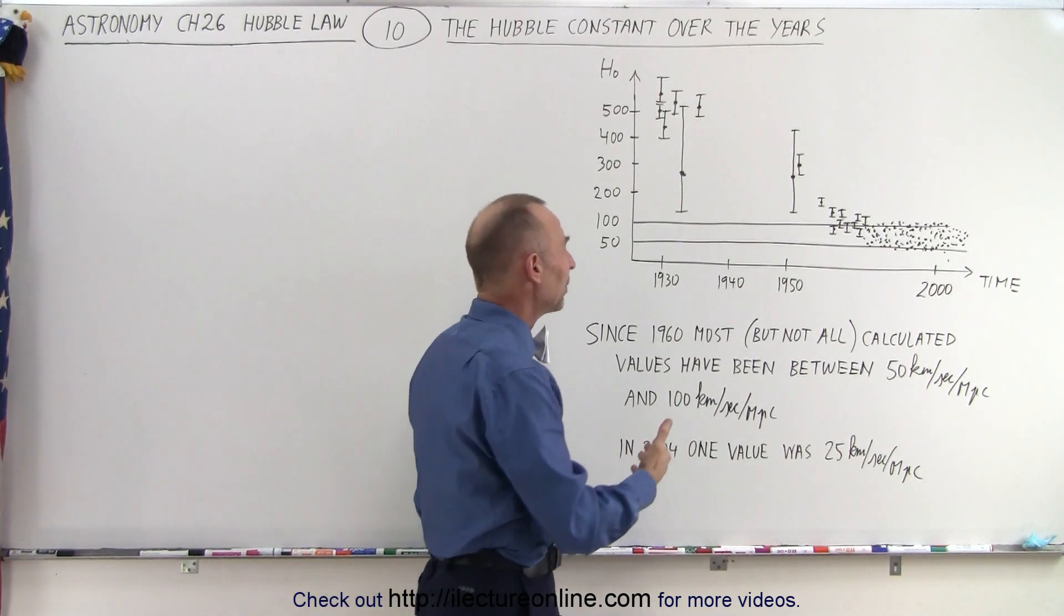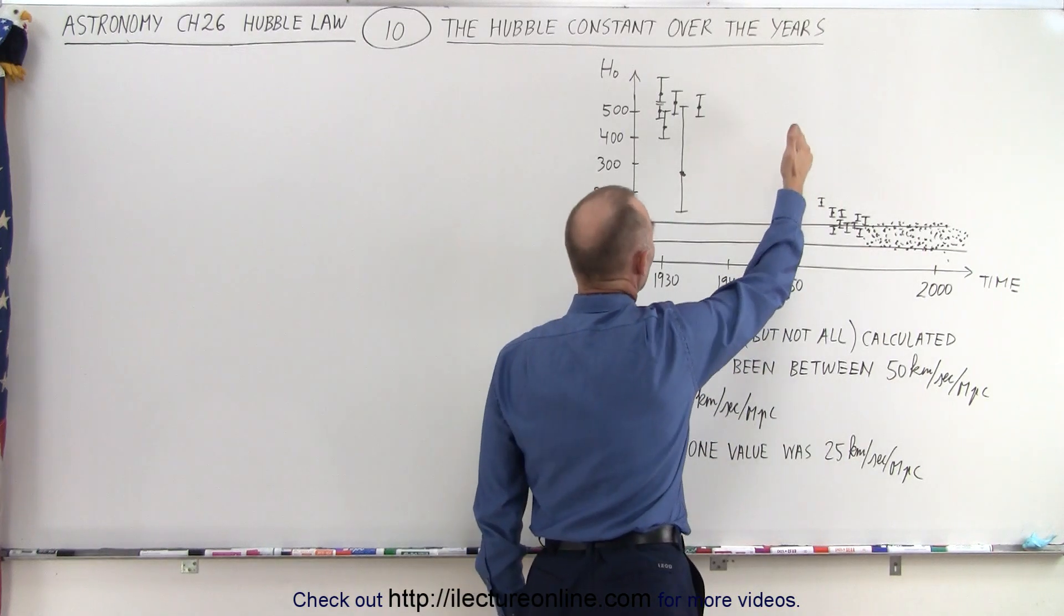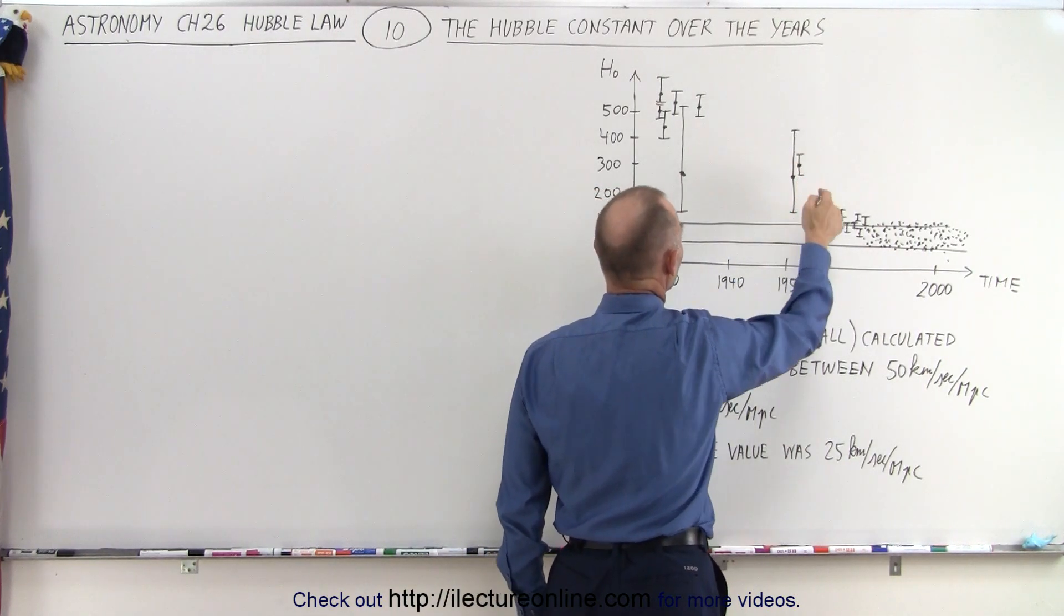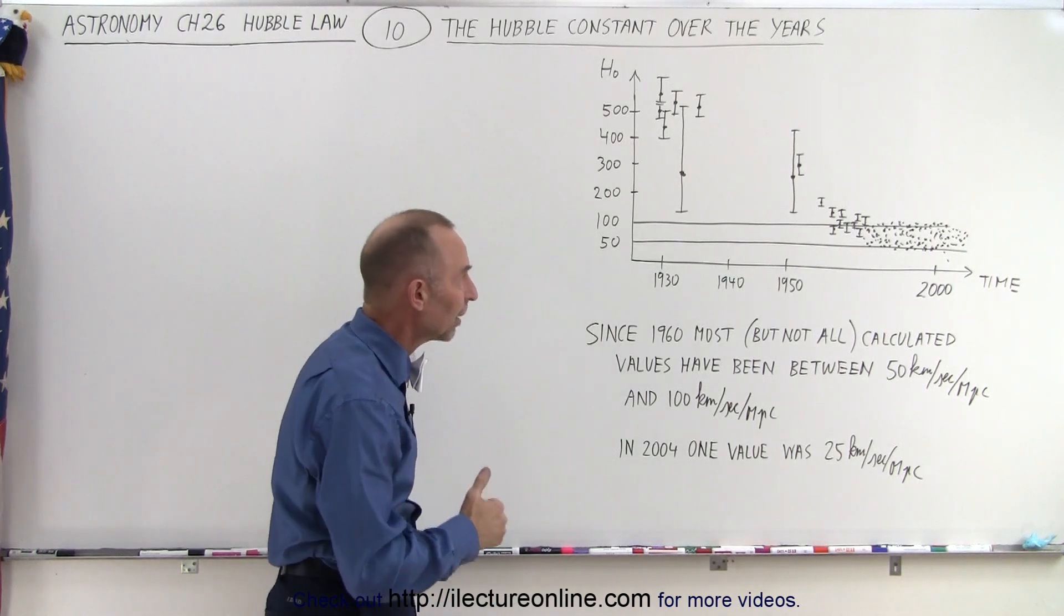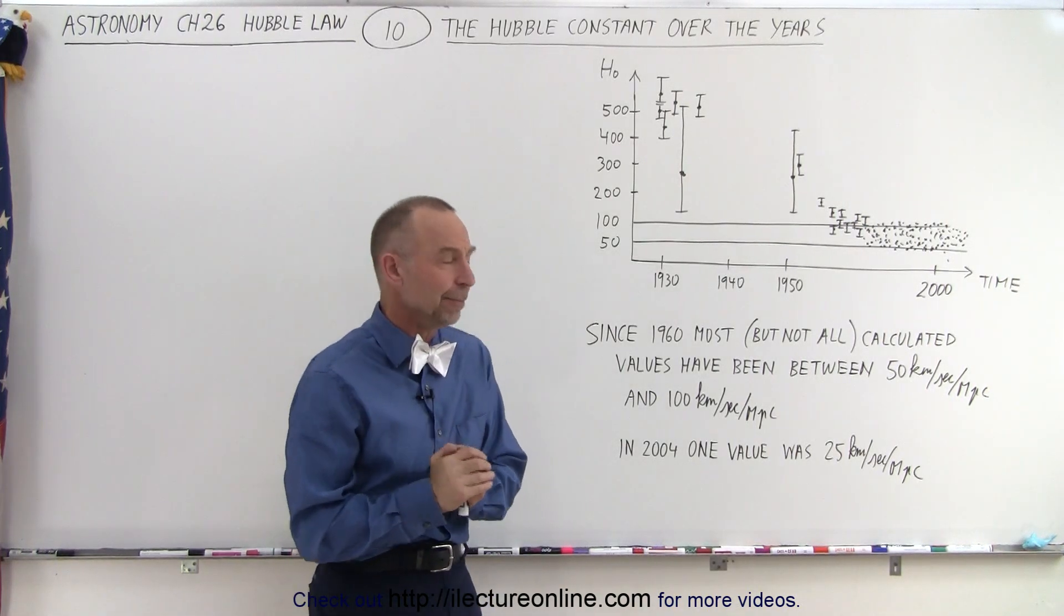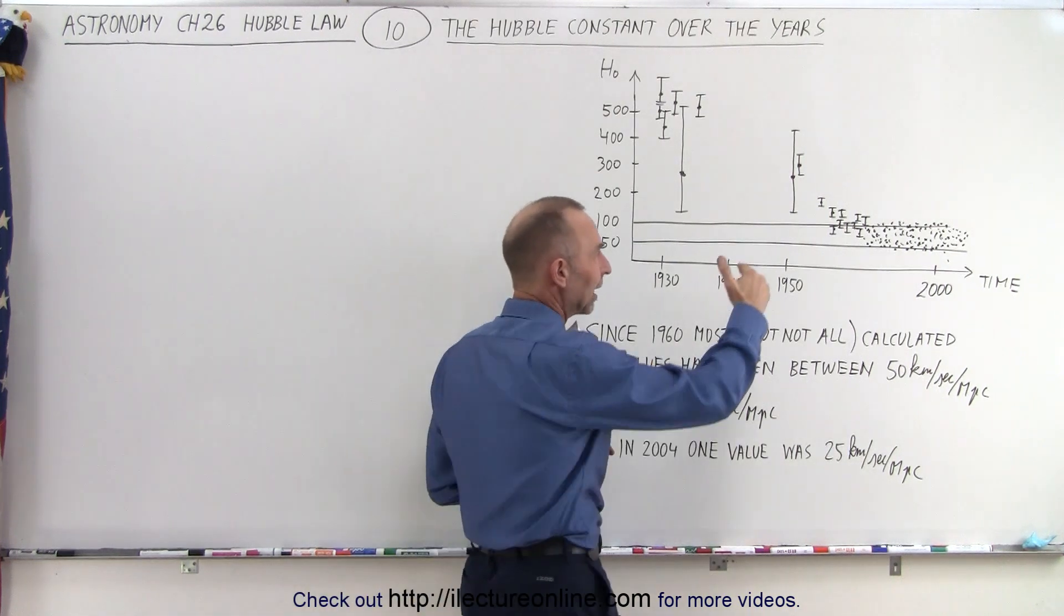The initial ones that happened in the early 1950s dropped it down to between 200 and 300, and then by the late 1950s the first estimate below 200 kilometers per second per megaparsec came in.